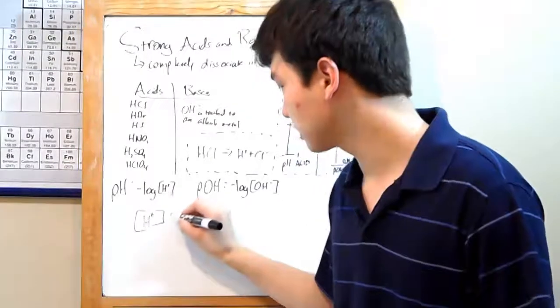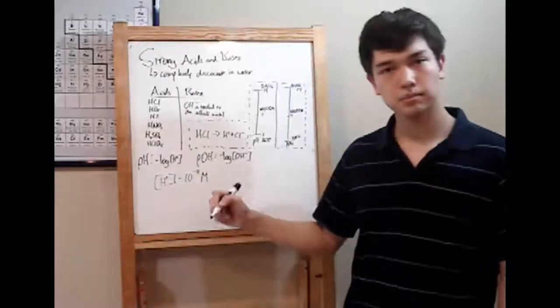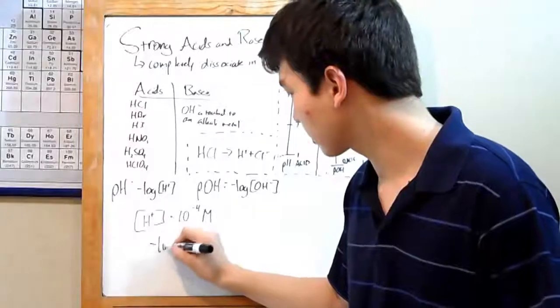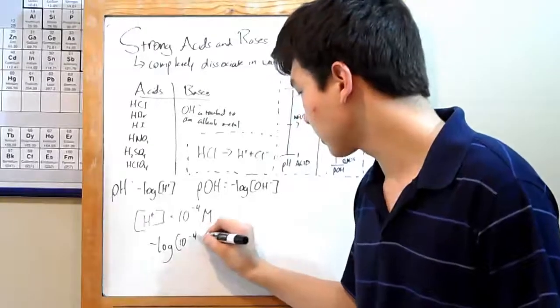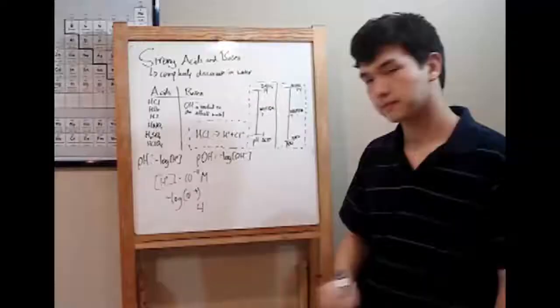Say you've got the concentration of H+ ions, 10 to the -4 molar. Just plug it into your calculator. Negative log, 10 to the -4. And what you should get is just 4. pH is 4.